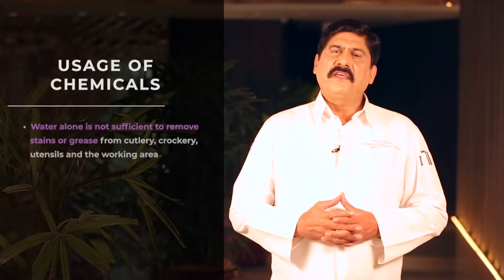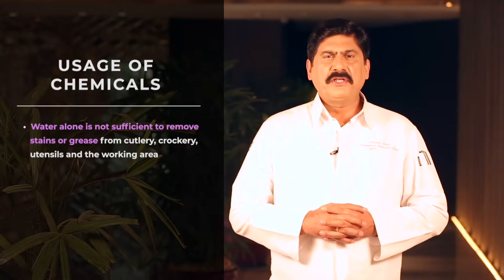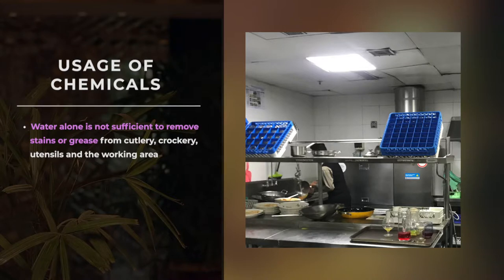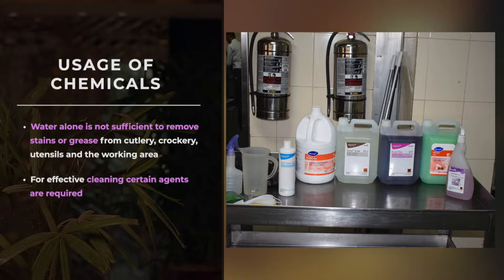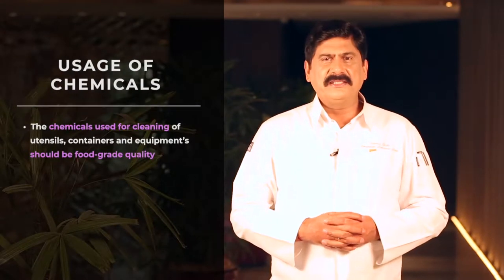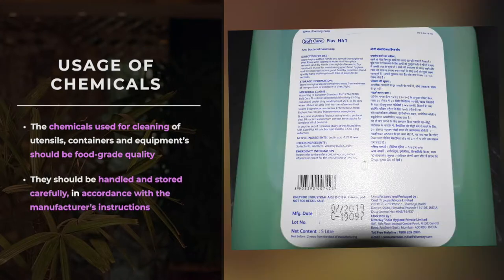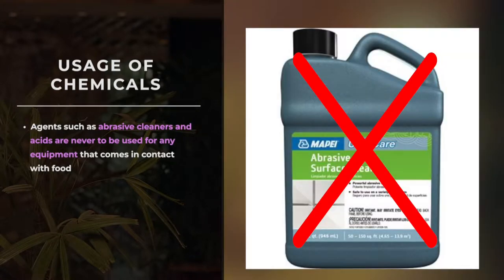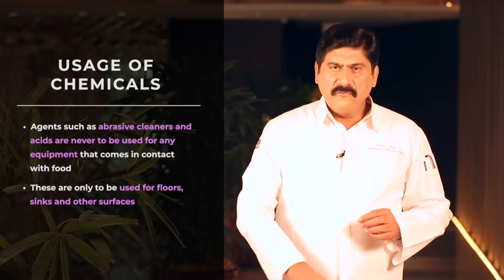Now we will discuss the usage of chemicals. At times, water alone is not sufficient to remove stains or grease from cutlery, crockery, utensils, and the working area. Besides the use of cleaning tools such as scrubbers, scourers, steel wool, and brushes, you might need to use certain cleaning agents such as soaps, liquids, dishwashing compounds, or other abrasive materials. The chemicals used for cleaning utensils, containers, and equipment should be food-grade quality, handled and stored carefully per manufacturer's instructions. Note that abrasive cleaners and acids are never to be used for any equipment that comes in contact with food — these are only for floors, sinks, and other surfaces.